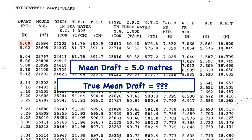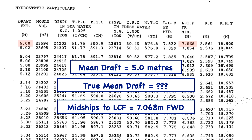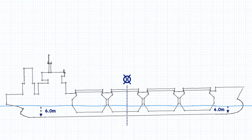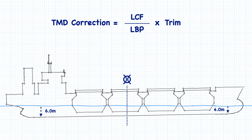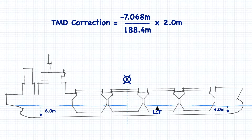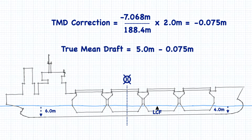But remember the ship's true mean draft will change depending on the position of the center of flotation. We need to perform a correction to our mean draft to get the true mean draft in order to start the calculation off right. From the tables we see that the LCF is 7.068 meters forward of midships. For the Gypsum Centennial, positive numbers are forward of midships and negative numbers are aft, so our LCF is negative 7.068 meters. The formula for calculating true mean draft is the distance of the LCF from midships divided by the length between perpendiculars, times the trim. The LCF is negative 7.068 meters, the ship's length between perpendiculars is 188.4 meters, and the vessel's trim is 2 meters by the stern. The correction works out to be negative 0.075 meters, giving us a true mean draft of 4.925 meters.